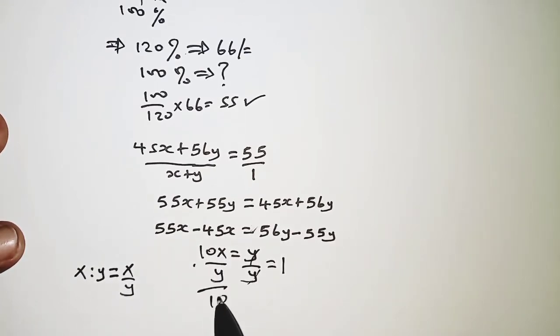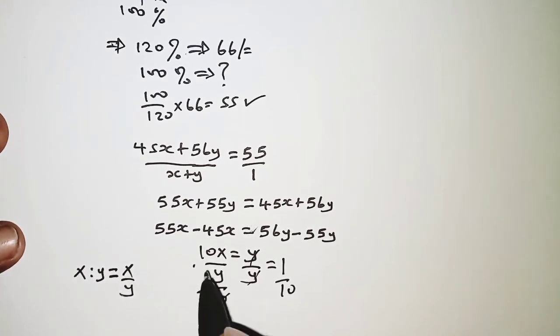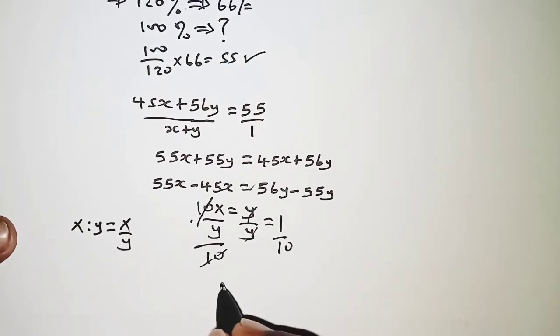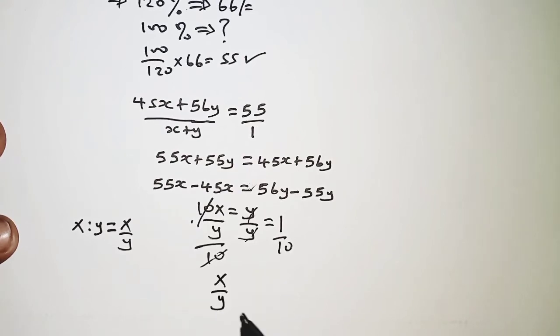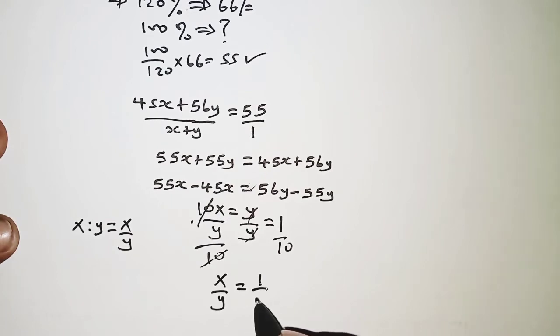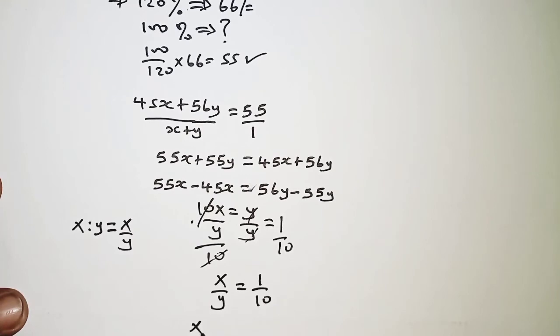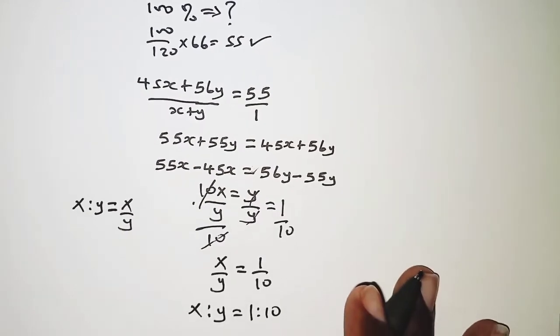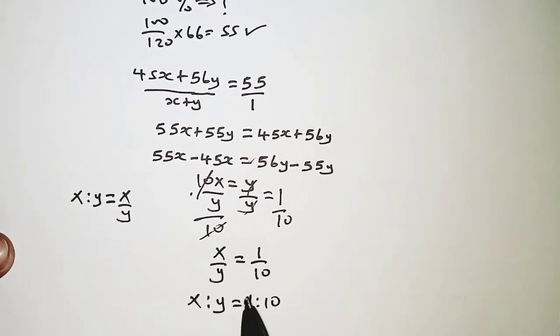But we are interested in getting x over y on the left hand side, so we divide both sides by 10 to get rid of 10 on the left hand side. Finally on the left hand side we have x over y as we had desired, and then on the right hand side we have 1 over 10. So x over y is x to y, and 1 over 10 is 1 to 10. So the ratio in which maize and millet were mixed here was 1 to 10.